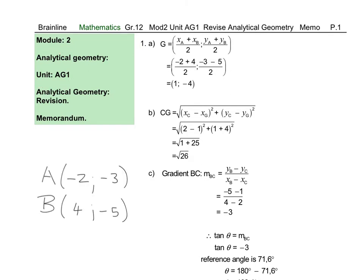In question 1A, we use the midpoint formula to calculate the midpoint G, where the x-values are added together and divided by 2, as well as the y-values added together and divided by 2. So the x-values: we take minus 2 plus 4, which is 2, divided by 2, which is 1. Then the y-values: we take minus 3 plus minus 5, which is minus 8, divided by 2 to get minus 4.